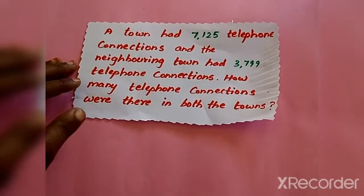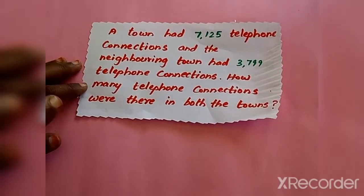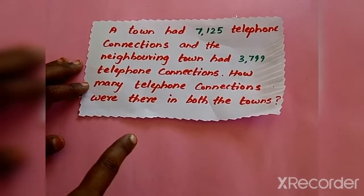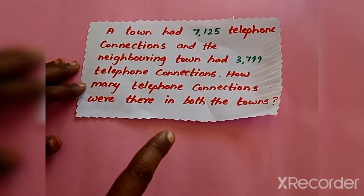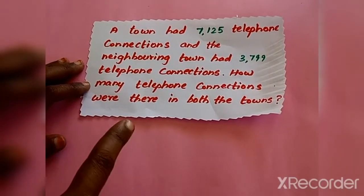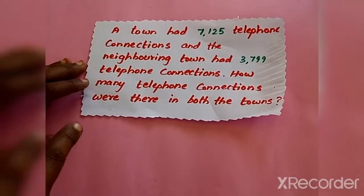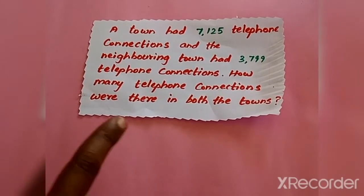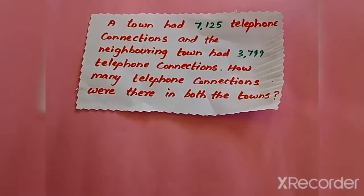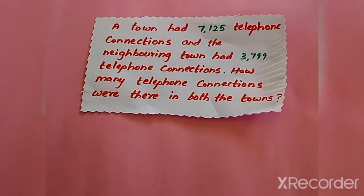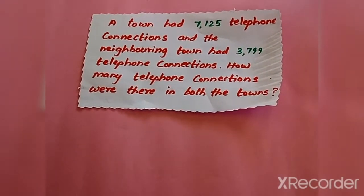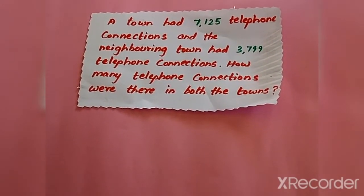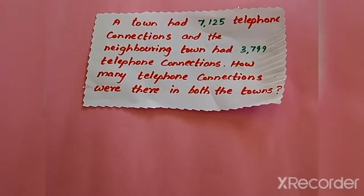Here is another question for you: A town had 7125 telephone connections and the neighboring town had 3799 telephone connections. How many telephone connections were there in both towns? As before, follow all five steps: first read and understand, then find the information, then decide what calculation to do, do the calculation, and then check.